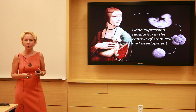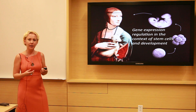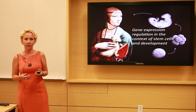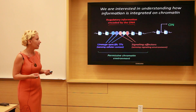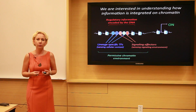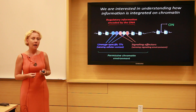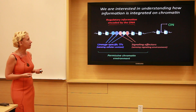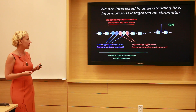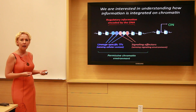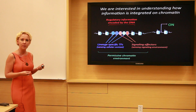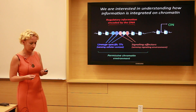We want to understand how complex forms and functions arise in developmental process from a single set of instructions encoded by our genome. We think that chromatin plays a central role in this process through integrating information, and we are trying to understand how the regulatory information encoded by the DNA is read in the context of cellular history and signaling environment to produce chromatin states that are either permissive or restrictive for gene expression.